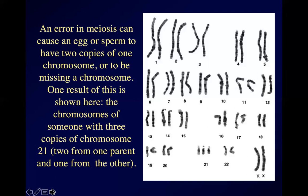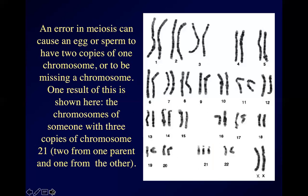What you're looking at here are the chromosomes of somebody who has two of each of his chromosomes — two of chromosome one, two of chromosome two, two of chromosome three, two of chromosome four, and so on all the way down to chromosome 21.